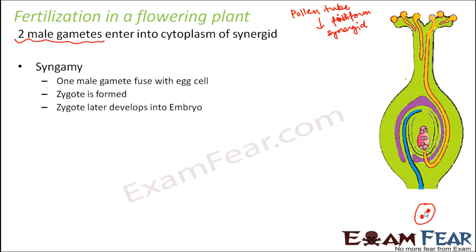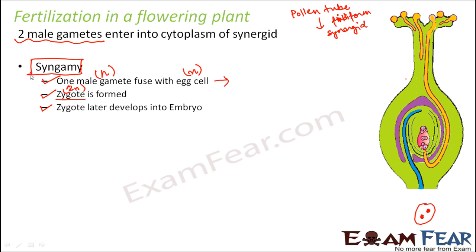Now, one male gamete will fuse with the egg cell, and the result will be a zygote. The male gamete is haploid, and the egg cell is also haploid, but when they fuse together, a diploid zygote is formed. This zygote will later develop into an embryo, and the embryo will give rise to a new plant. This fusion of the male gamete with the egg cell is known as syngamy — 'syn' means together and 'gamy' means union.